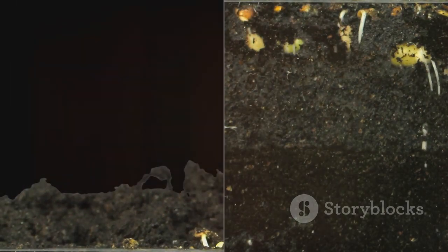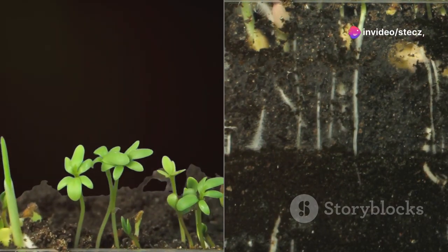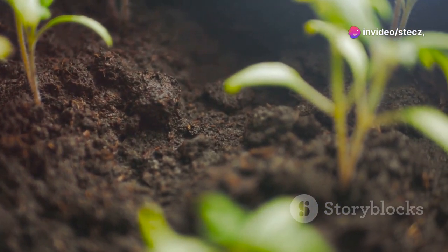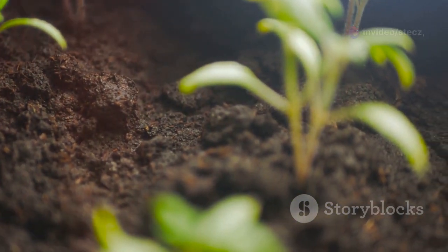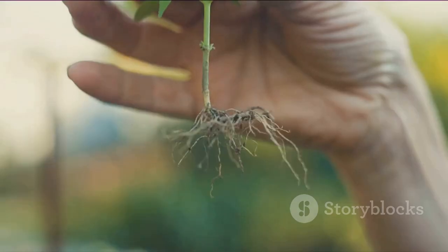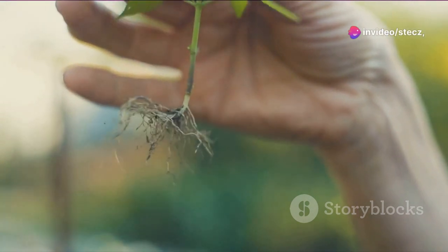These microscopic marvels convert atmospheric nitrogen into a plant-usable form, ammonia. The bacteria, residing in specialized nodules on the roots of certain plants, act as interpreters, converting the nitrogen language into a dialect the plant can understand and utilize. This symbiotic relationship highlights the intricate web of interactions that sustain our planet.